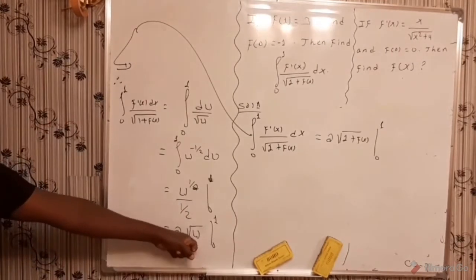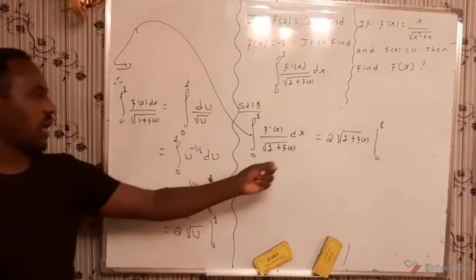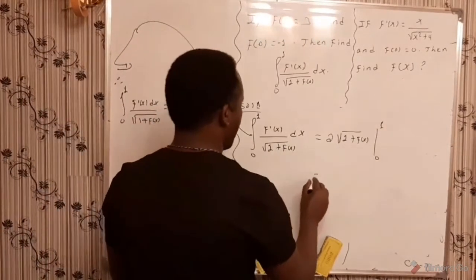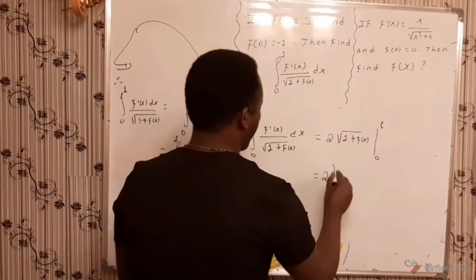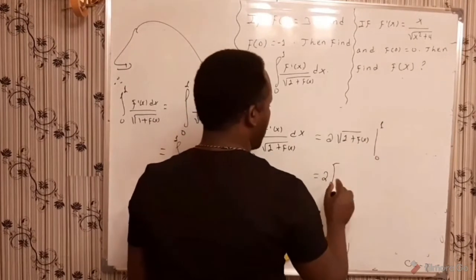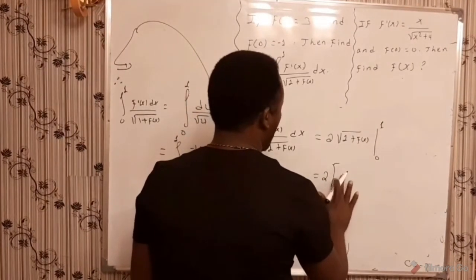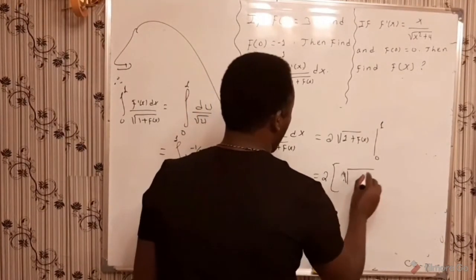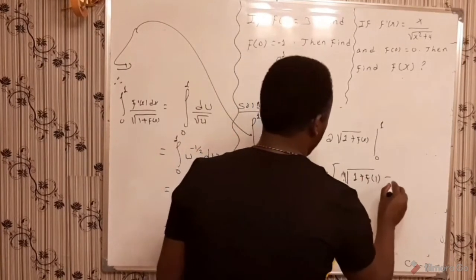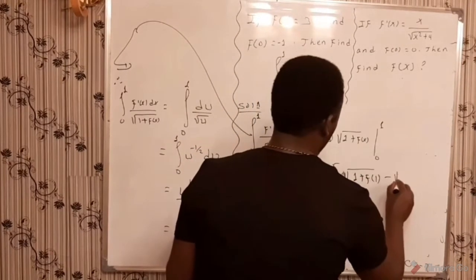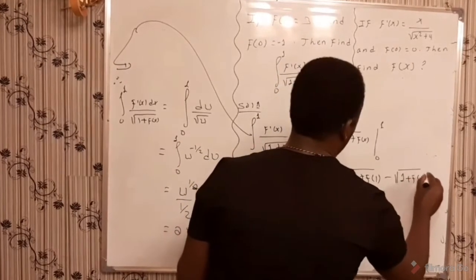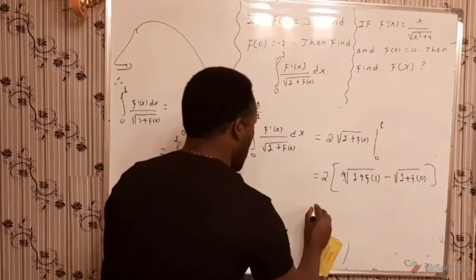Substituting the given values of f of 1 and f of 0, we can calculate the final result as 2 times the square root of 1 plus f of 1 minus the square root of 1 plus f of 0.